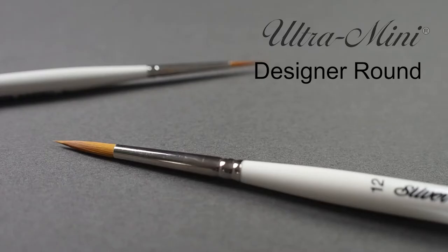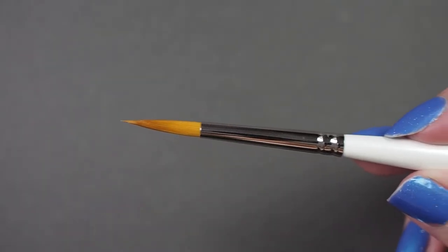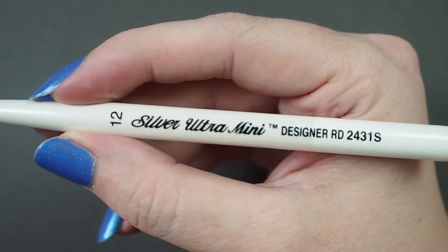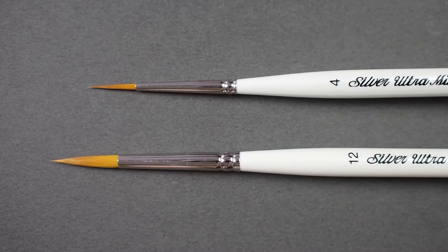Check out Silver's Ultra Mini Designer Round. The Designer Round is similar to a typical round brush in that it comes to a sharp point, but differs in that it has a longer length.